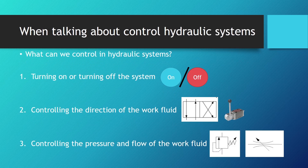When talking about controlling the hydraulic system, what can we really control? What are the parameters and variables that can be altered to change something at the output? First, the simplest thing we can do is just turn the system on or off. We achieve this by turning on the electric motor that powers our pump, or by using a shutoff valve which disables the fluid flow to the hydraulic cylinder, stopping the cylinder's function.